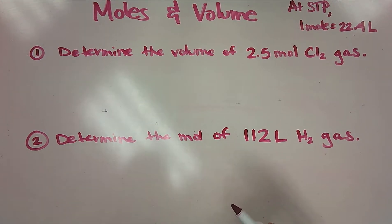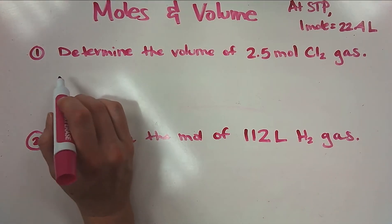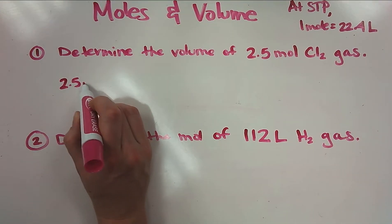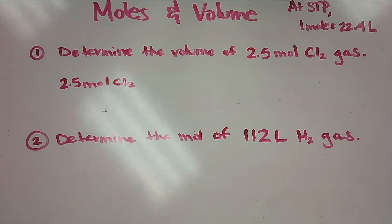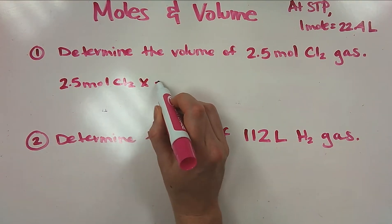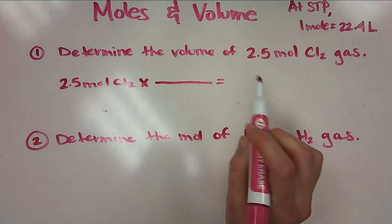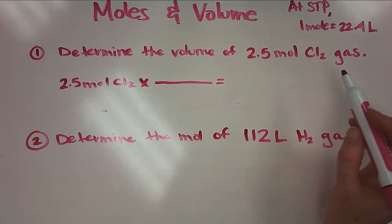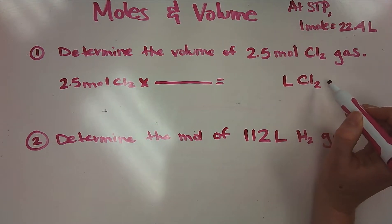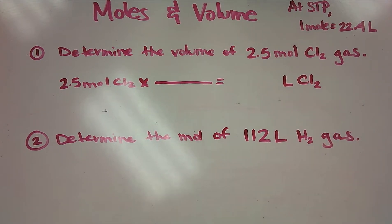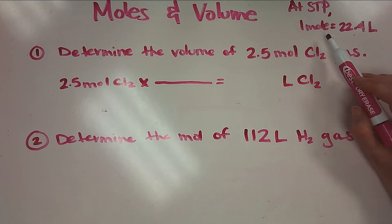I need to go ahead and start with what I know or what I'm given, so I'm given 2.5 mole of chlorine. I'm going to set up a conversion factor. I want volume in the end, so volume is going to be expressed in liters. If I have 2.5 mole of chlorine, how many liters of chlorine do I have? Now I'm going to plug in my conversion factor, making sure I solve for what I want. That part needs to be on top.